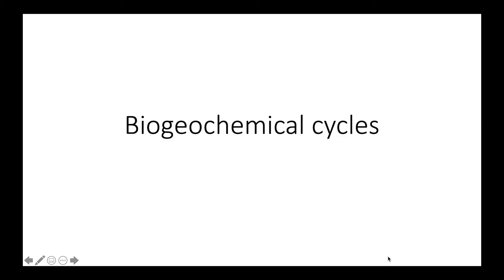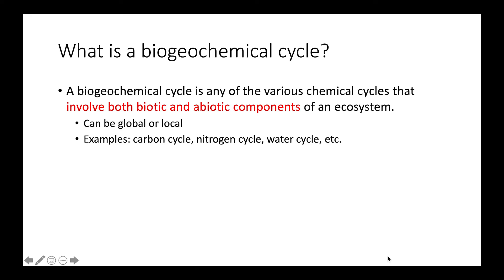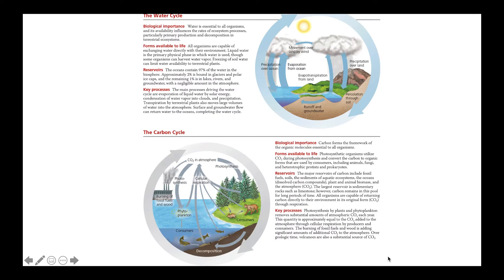This video is going to be about biogeochemical cycles. A biogeochemical cycle is any of the various chemical cycles that involve both biotic and abiotic components of an ecosystem. These cycles can be either on a global scale or local scale. Some examples of biogeochemical cycles would be the carbon cycle, the nitrogen cycle, and the water cycle.